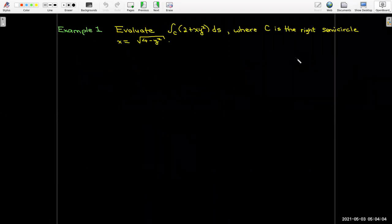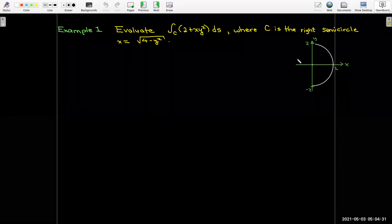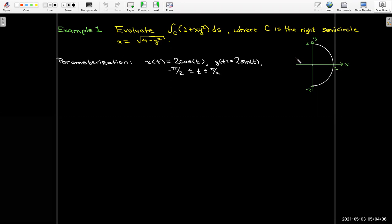Let's do an example here. We're going to evaluate the line integral of 2 + xy^2 along the curve C, where C is the right semicircle x = 4 - y^2. That's a portion of x^2 + y^2 = 4. It is the right half of it, so the part that's in the first and the fourth quadrant. We'll use the standard parameterization for a circle: x is going to be 2cos(t), 2 because that's the radius of the semicircle, and y is 2sin(t).